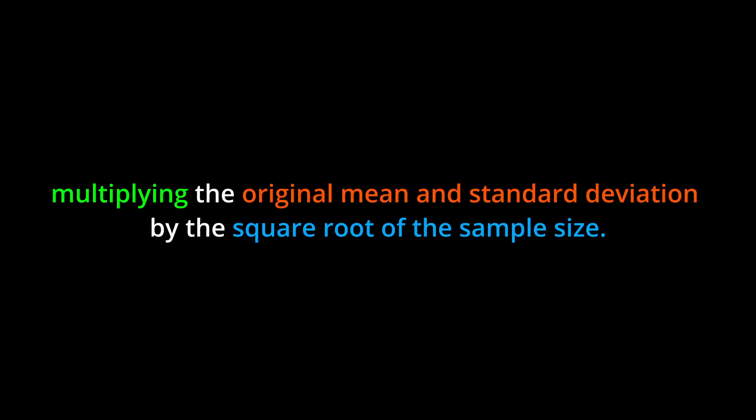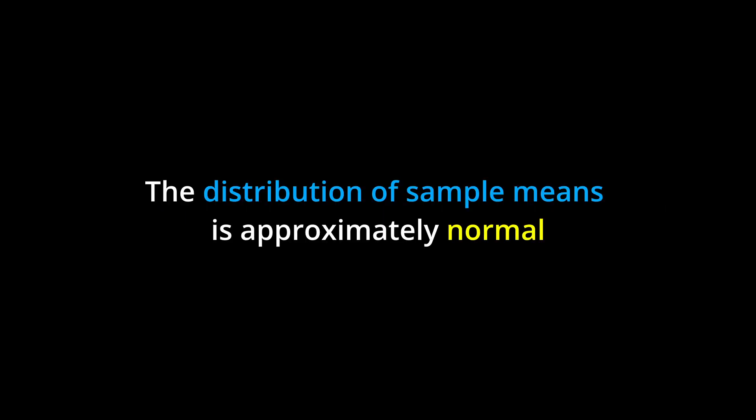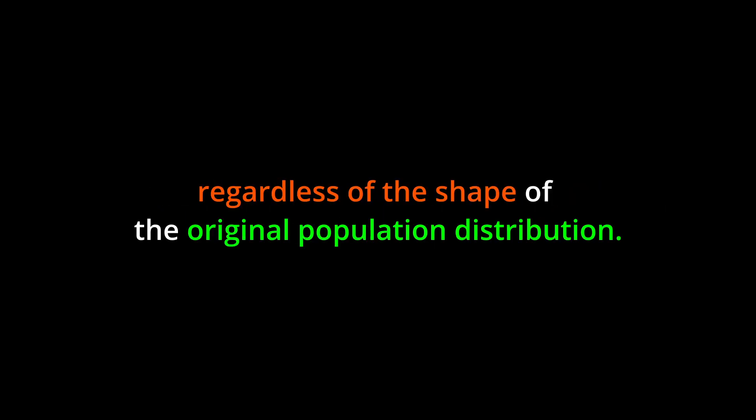The mean and standard deviation for sample means can be calculated by multiplying the original mean and standard deviation by the square root of the sample size. The distribution of sample means is approximately normal, regardless of the shape of the original population distribution.